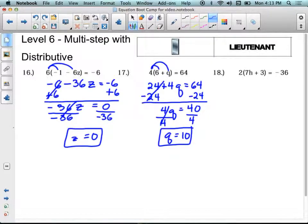And one more example with the distributive property here. 2 times 7h, 2 times 3, that would be 14h plus 6 equals negative 36.